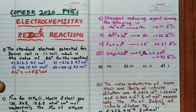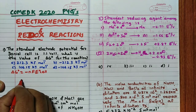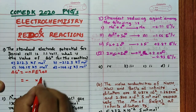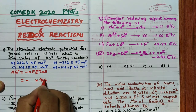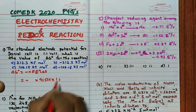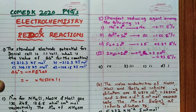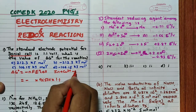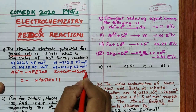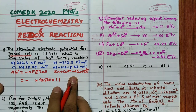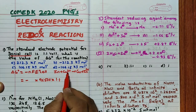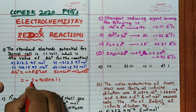Now, the n value is very important. ΔG° = -n × F × E°cell, where F = 96500 coulombs and E°cell = 1.1. The n value depends on the Daniel cell reaction: Zn + Cu²⁺ → Cu + Zn²⁺. In this reaction, zinc loses 2 electrons and copper gains 2 electrons, so n = 2.